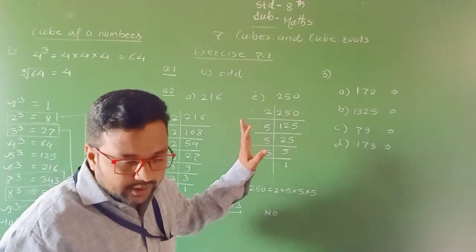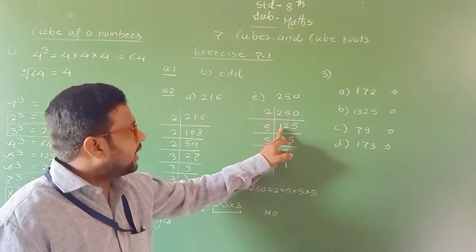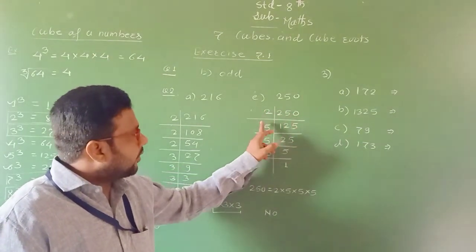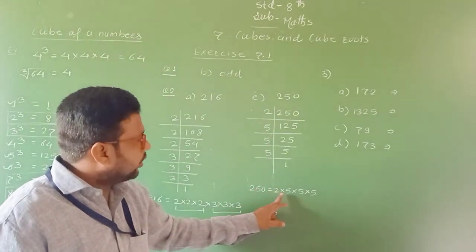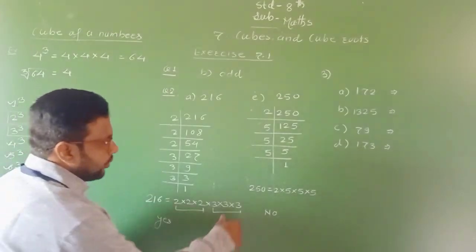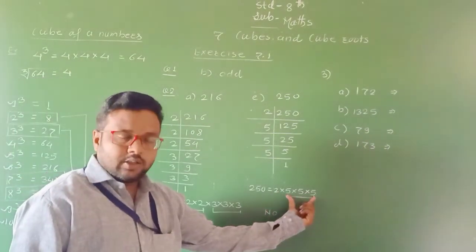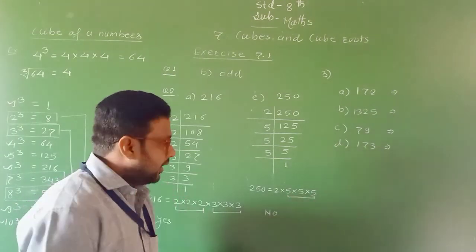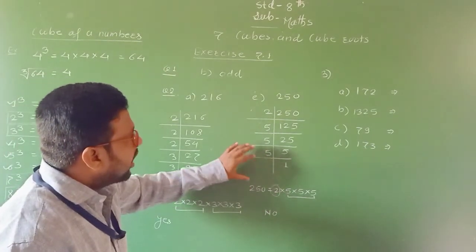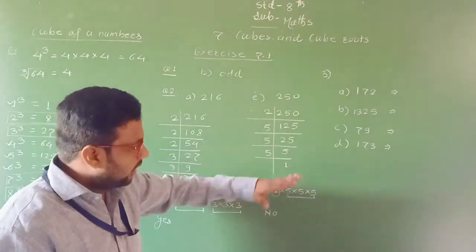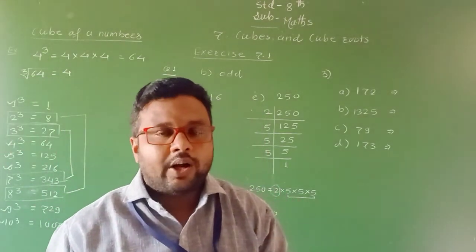Now one more example. For example E, the number is 250. Factorizing: 250 divided by 2 gives 125. 125 divided by 5 gives 25. 25 divided by 5 gives 5. 5 divided by 5 gives 1. So 250 equals 2×5×5×5. The factor 5 forms a group of 3, but 2 is single — it is not in a group of 3. Therefore, 250 is not a perfect cube. Answer: no. You have to check the remaining numbers in the same way.